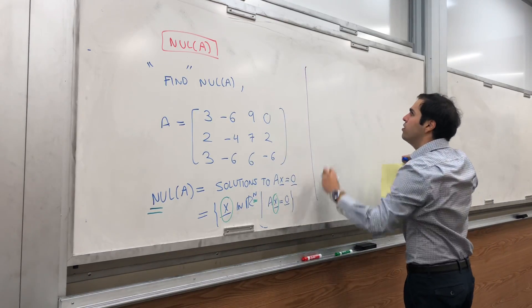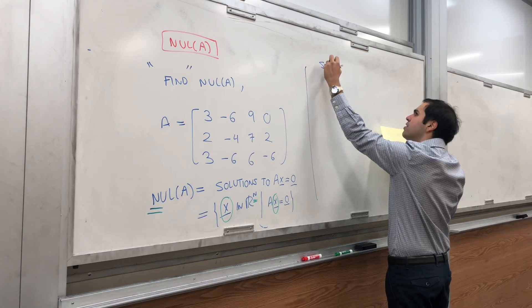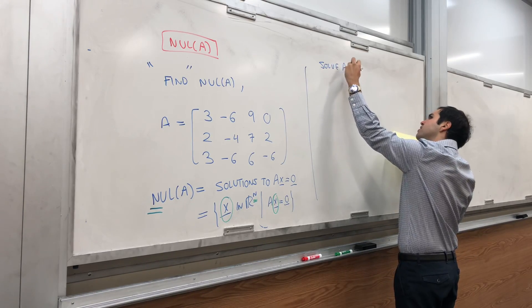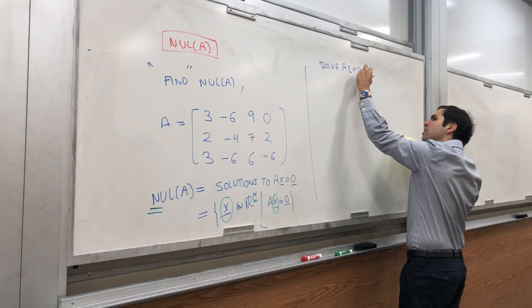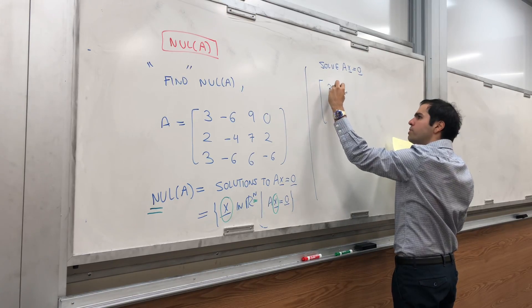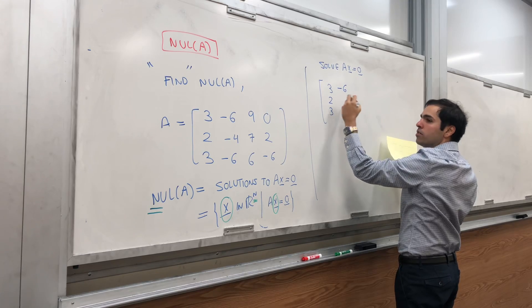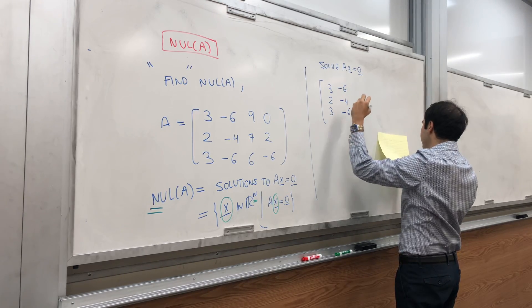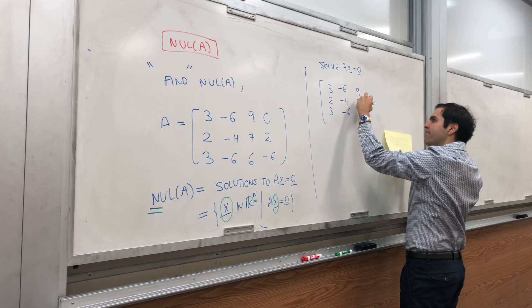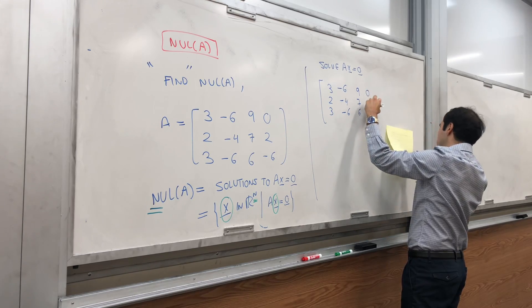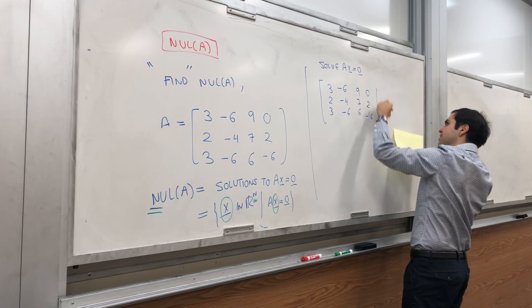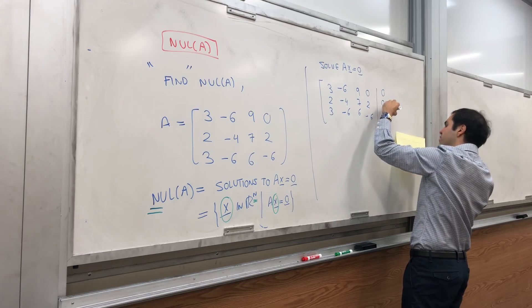So, let's do that using row reduction. So, solve AX equals zero. Which means, write the same thing down, but with a column of zeros. So, minus six, minus four, minus six. Nine, seven, six. Zero, two, minus six. And then, zero, zero, zero.